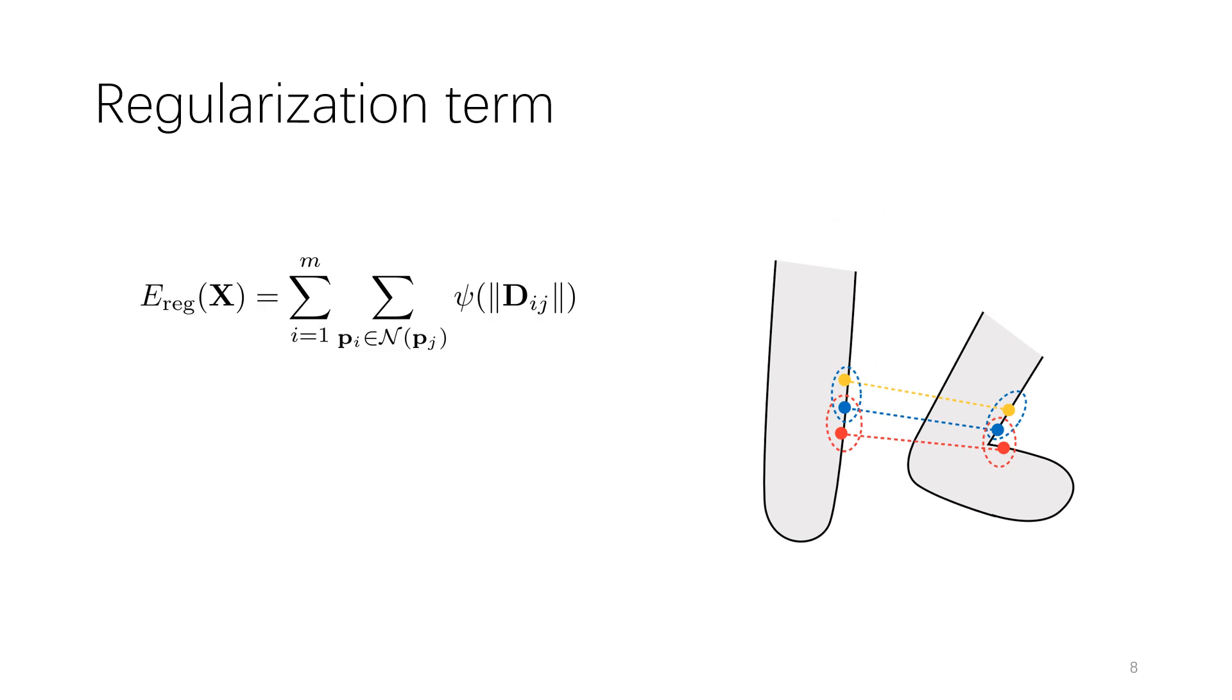For the regularization term, we notice that the differences of transformations in the neighboring vertices should be small, to make local surface regions smooth, like the positions of yellow and blue pairs in the picture.